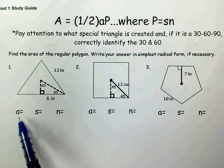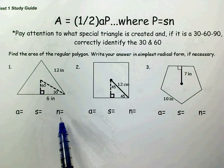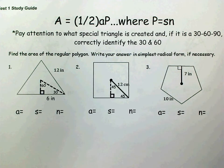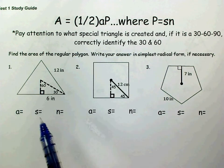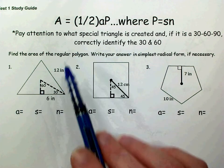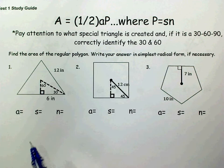So in each one of these problems, you need to identify the apothem, the side length, and the number of sides in order to use the formula. On this video, I'm going to be looking at problems number 1 and 5 since they are both equilateral triangles.